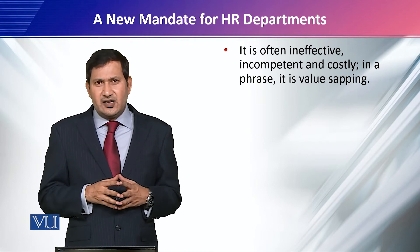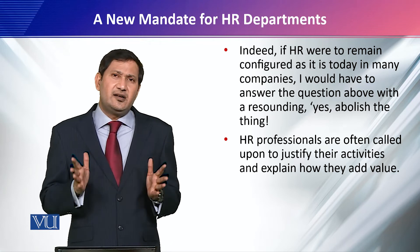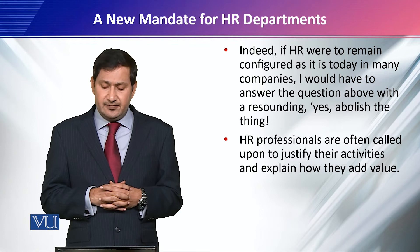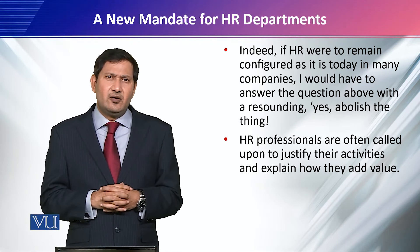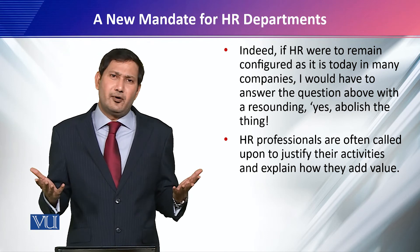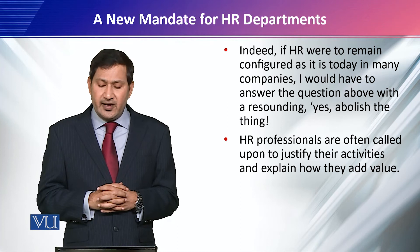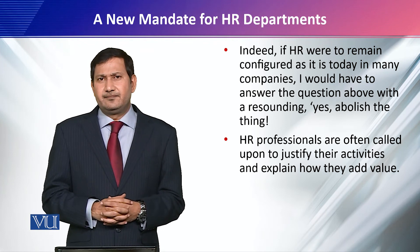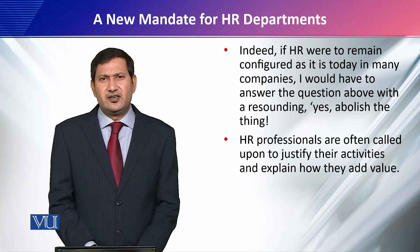But in 1997, HR was said to be often ineffective, incompetent, and costly — in a brief, it is value-draining. Ulrich suggested that if he had to answer this question, he would say yes, abolish it. Why? Until the 1980s and 1990s, what HR was doing could simply be done by any professional or any employee in the organization — just keeping simple records of employees, their salary, and their attendance. So HR professionals are often called upon to justify their activities and explain how they add value. What HR is today is greatly different from what it was in the 1990s. We will talk about HR roles in more detail in the coming modules.